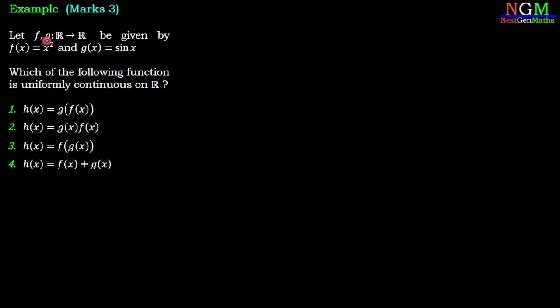Question is: f, g defined from R to R be given by f(x) = x² and g(x) = sin x. Which of the following function is uniformly continuous on R and we have given four functions.